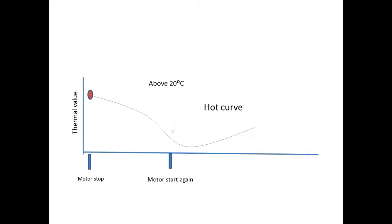Also, if the motor has been stopped for some time or a long time, and the relay has still not reached the cold area — that is if it is below 20 degrees but above 10 degrees Celsius — even in that area, if you start the motor, your relay will consider it a hot curve. By this I think you can clearly understand what is cold curve and what is hot curve. The cold curve is simply when you start the motor initially. The hot curve is when you restart the motor again within a shorter time gap.